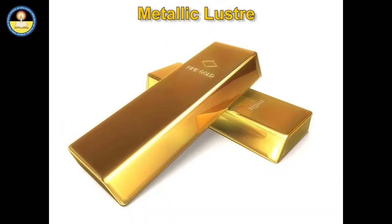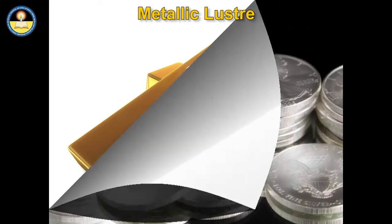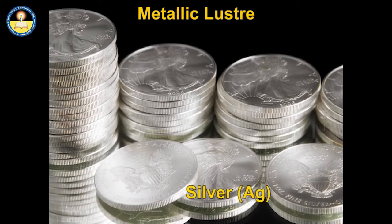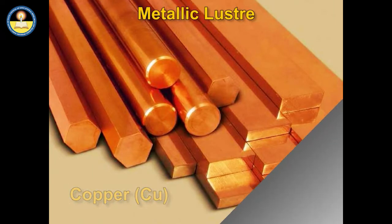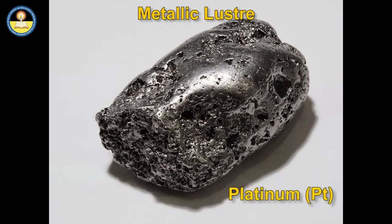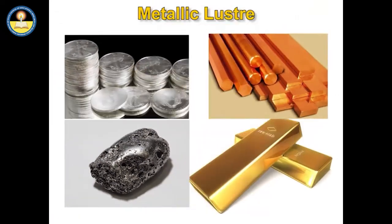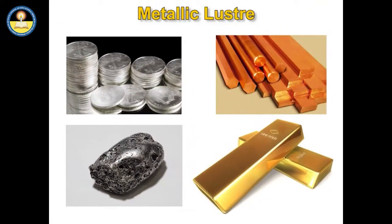Some metals have more shine than others. Gold (Au), silver (Ag), copper (Cu), and platinum (Pt) are such examples. Others can be polished to give a good luster. Aluminium, when exposed to air, forms a protective dull layer of aluminium oxide.